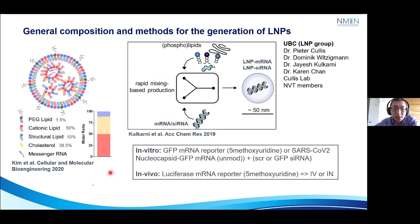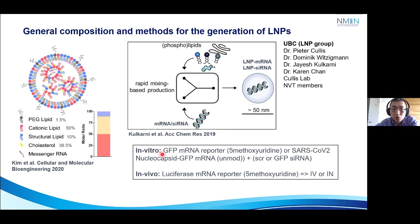For our in vitro studies, we are putting in reporter genes. GFP mRNA is modified at the 5-methyluridine, or the actual SARS-CoV-2 nucleocapsid portion of the virus in fusion with GFP, which is unmodified to resemble the original nature of the virus. Plus the scrambled or GFP siRNA to knock down our reporter gene as a proof of concept. For our in vivo studies, we will be putting in luciferase, also modified at the 5-methyluridine, delivered intravenously in mice as a positive control, followed by intranasal administration to see if we can label the respiratory mucosa.